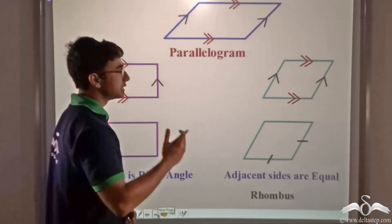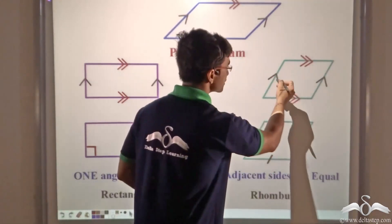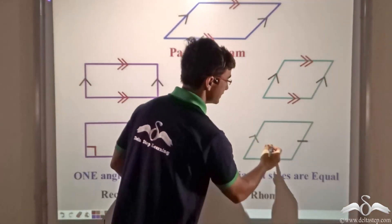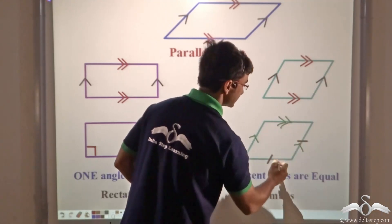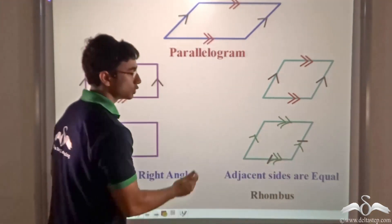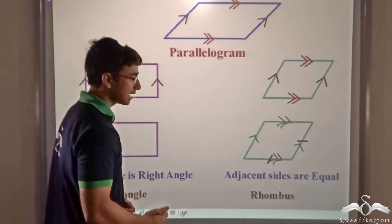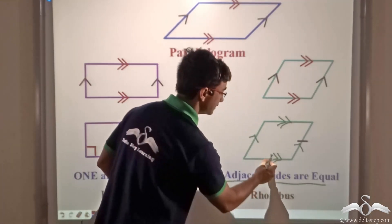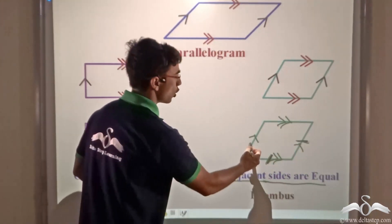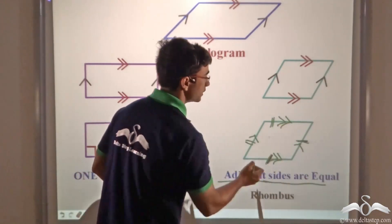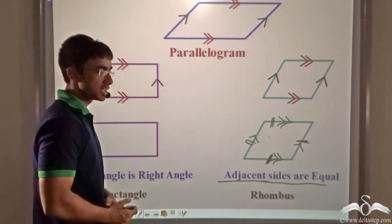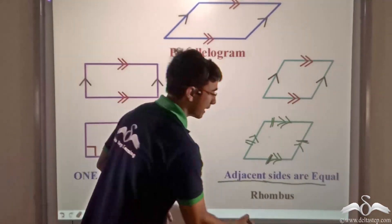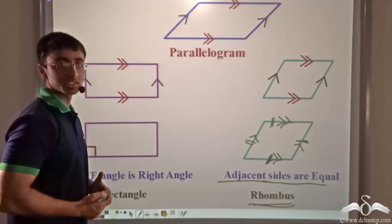Another special case of a parallelogram is when, keeping opposite sides parallel, the adjacent sides are also equal to one another. This kind of parallelogram is known as a rhombus.